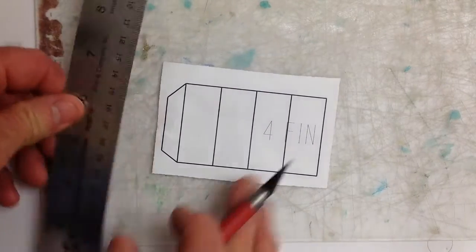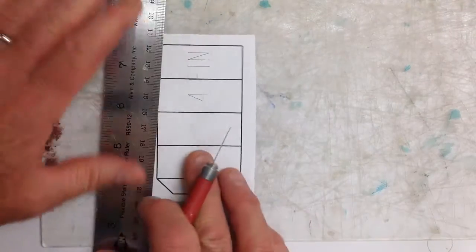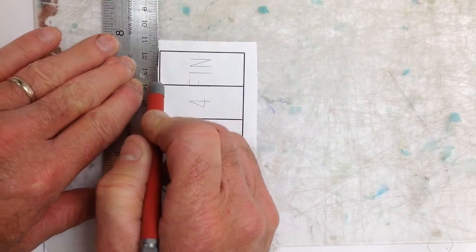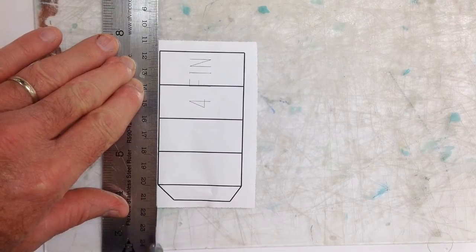Use a ruler and a good sharp X-acto knife to do your cutting. Leave the lines. Don't cut the lines off. Like so.